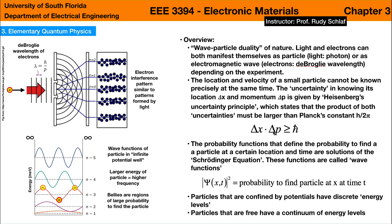So if you know the momentum very well, then you don't know where the particle is. Or if you know where the particle is, then you don't really know what its velocity or momentum is. We will see that one can predict this behavior with the Schrödinger equation. The Schrödinger equation is a recipe that yields so-called wave functions that give us the probability to find a particle at a certain location. We will initially solve the Schrödinger equation for the infinite potential well, which will yield some basic insight into the behavior of particles in quantum physics.